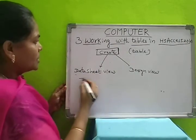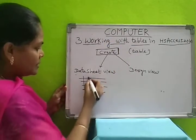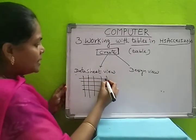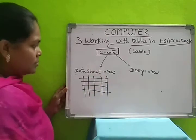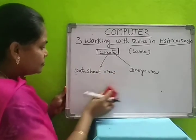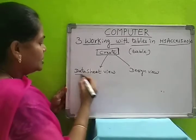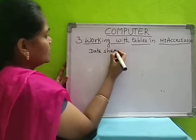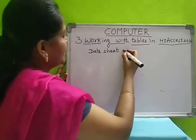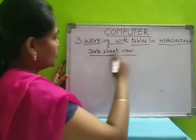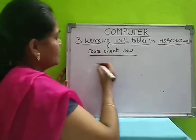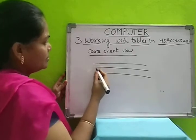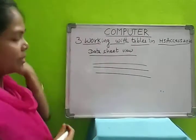In datasheet view, rows and columns are there — you can enter the column names there and select the data type. When you open MS Access, this will be displayed: rows and columns where you can write the column names and data. According to that you can enter the information.